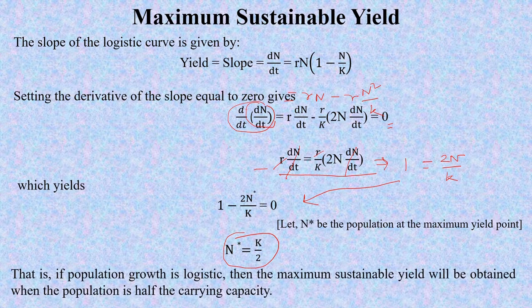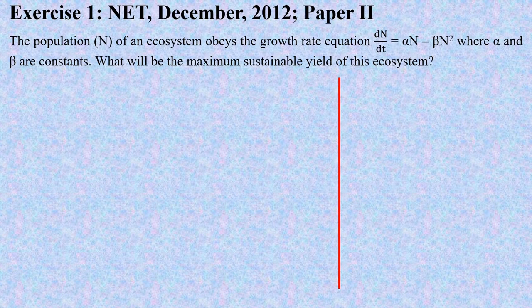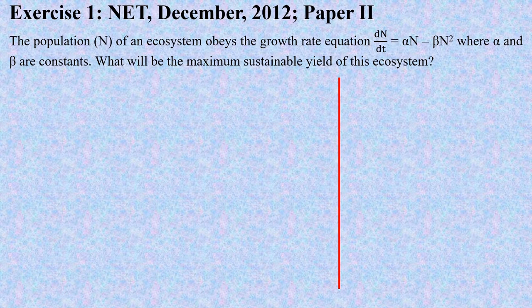That is, if population growth is logistic, then maximum sustainable yield will be obtained when the population is half the carrying capacity. This is a question from the National Eligibility Test. The question is: a population N of an ecosystem obeys a growth rate equation dn/dt equals alpha·N minus beta·N², where alpha and beta are constants. What will be the maximum sustainable yield of this ecosystem?